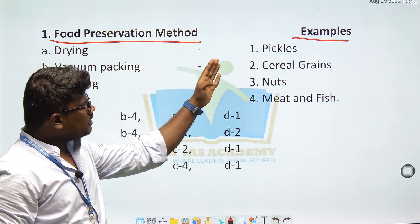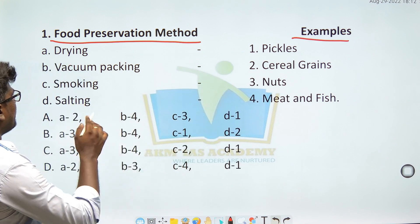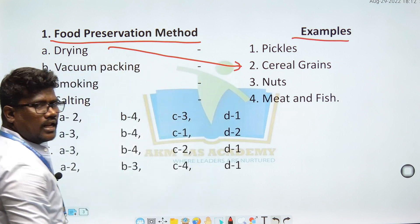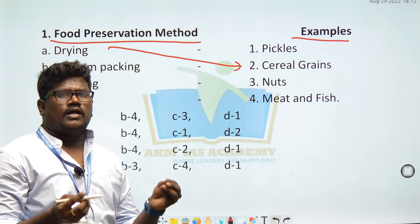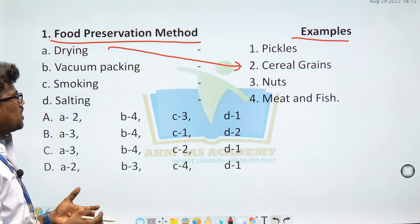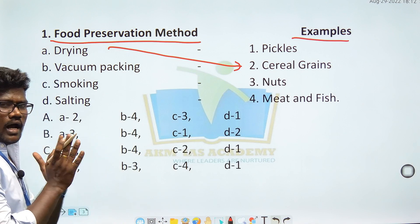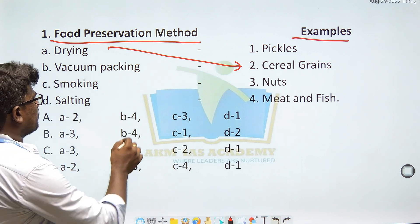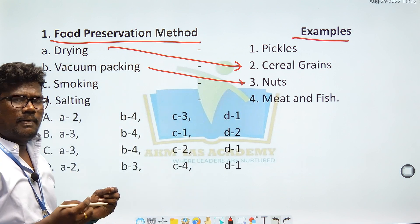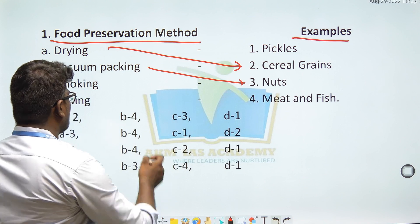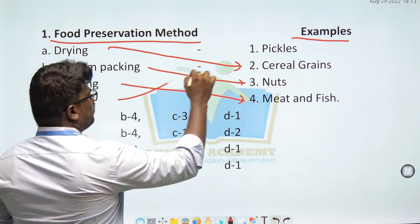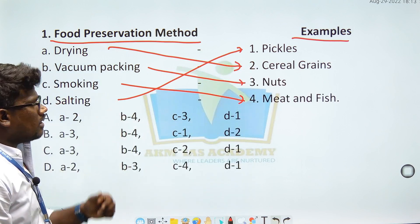The examples to match are: pickles, cereal grains, nuts, and meat and fish. Drying is matched with cereal grains — for example, wheat can be dried. Vacuum packing is matched with nuts, as it removes moisture content. Smoking is the method used to preserve meat and fish. Salting is matched with pickles.